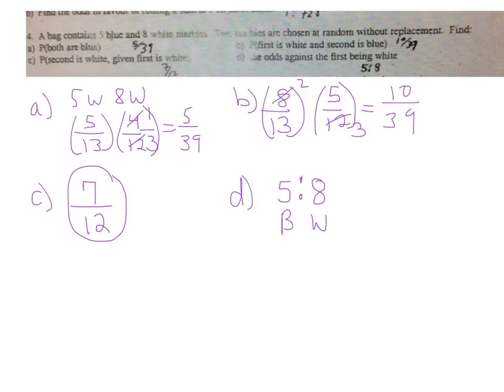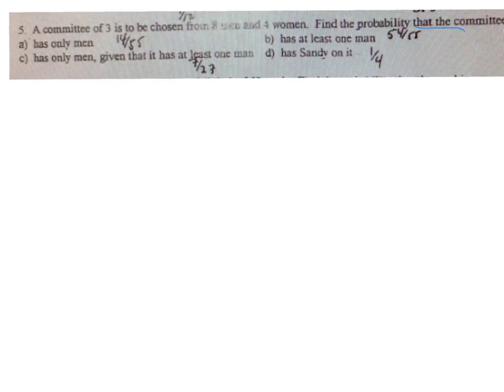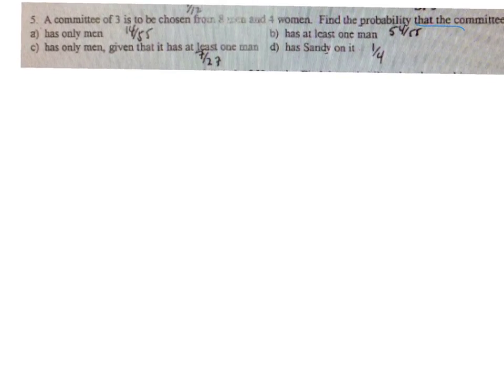So I'm just going to flip pages and go on to number 5. Here's number 5. Alright, so number 5 is... Let me make that just a little bit bigger so my old eyes can see it. Alright, so we have 8 men, 4 women, and we're going to choose a committee of 3 people.